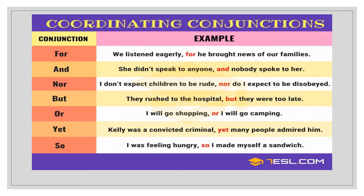If the ideas are complementary rather than contrasting, you use 'and' instead of 'but'. 'Or' is used when you have an option or alternative — for example: 'I will go shopping, or I will go camping.' You have two options, so you use 'or'. 'Yet' has the same meaning as 'but' — for example: 'Kelly was a convicted criminal, yet many people admire him.' It contrasts two ideas.